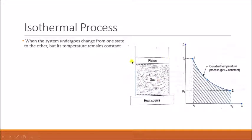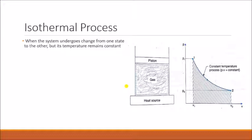Here you can see a cylinder and piston arrangement. Below the piston is the gas, which we call the system, and below the cylinder we have a heating source. When heat is supplied from this heating source, the gas starts expanding, pushing the piston from its initial state to its final state. The heat is added continuously and gradually such that the temperature of the system remains constant during the expansion — hence it is called a constant temperature process or isothermal process.